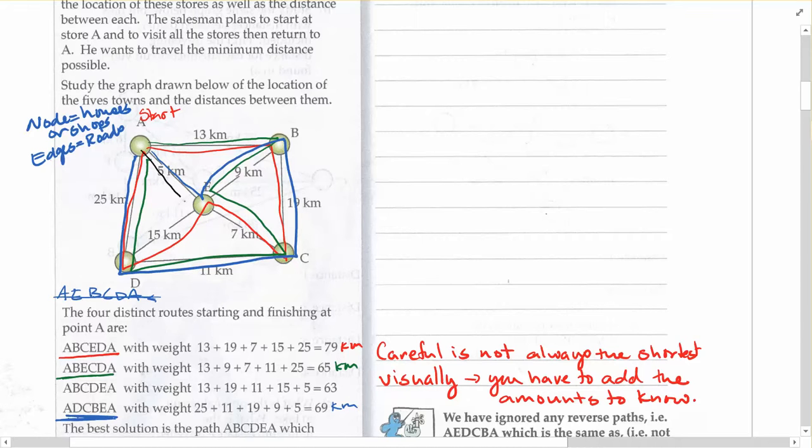So A, E, and this time I'll go to D. And then from here, I've got to go to C and B and A. So you can see that black one is different than all the others as well. And it ends up being this one here. So 13 plus 19 plus 11 plus 5 plus 15 equals 63 kilometers.